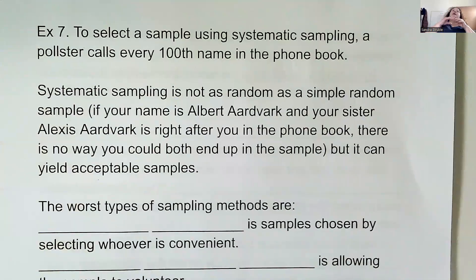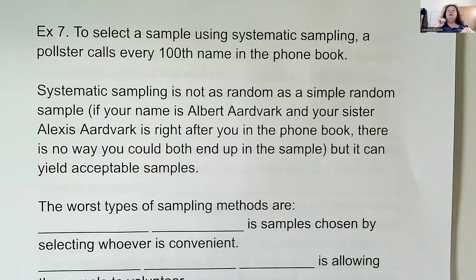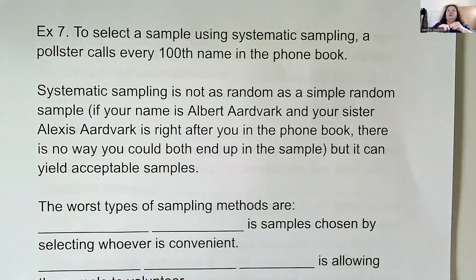Here's a good example: a pollster calls every 100th name in the phone book — that's systematic sampling. Systematic sampling is not as random as simple random sampling, because if your name is Adam Aardvark, then his sister Alexis Aardvark right behind him is not going to be in the sample. They'll choose one name and then count a hundred more before choosing another, so Alexis doesn't have a chance of being included. You can still get decent samples that way, but not necessarily the most representative of the population.